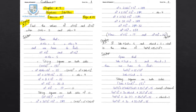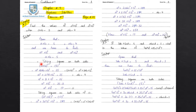We have to find a square plus b square and a raised to power 4 plus b raised to power 4. We have given a plus b is equal to 5. Squaring both sides gives 25.